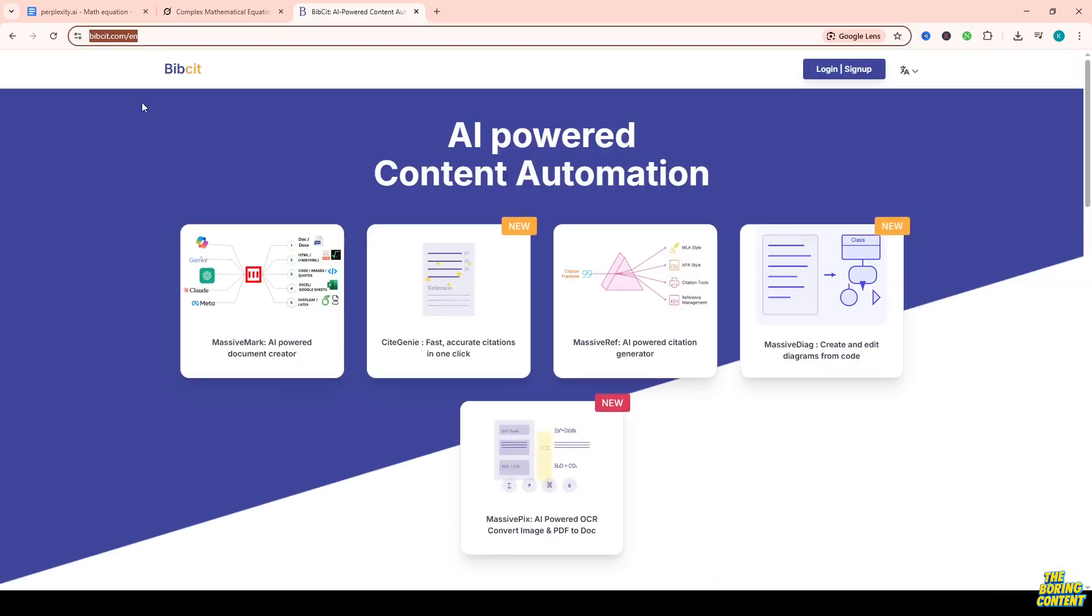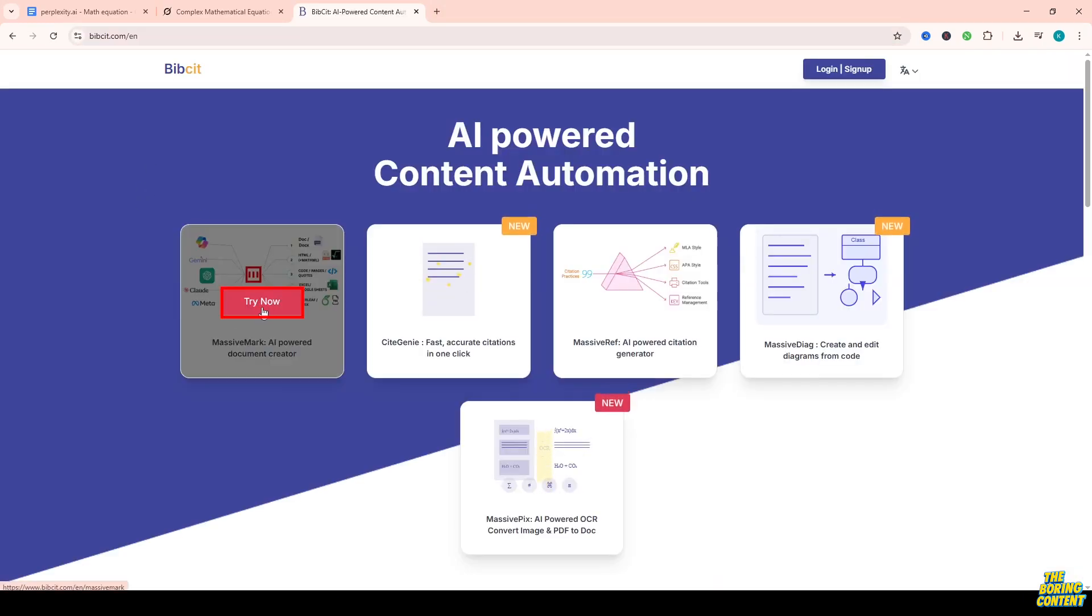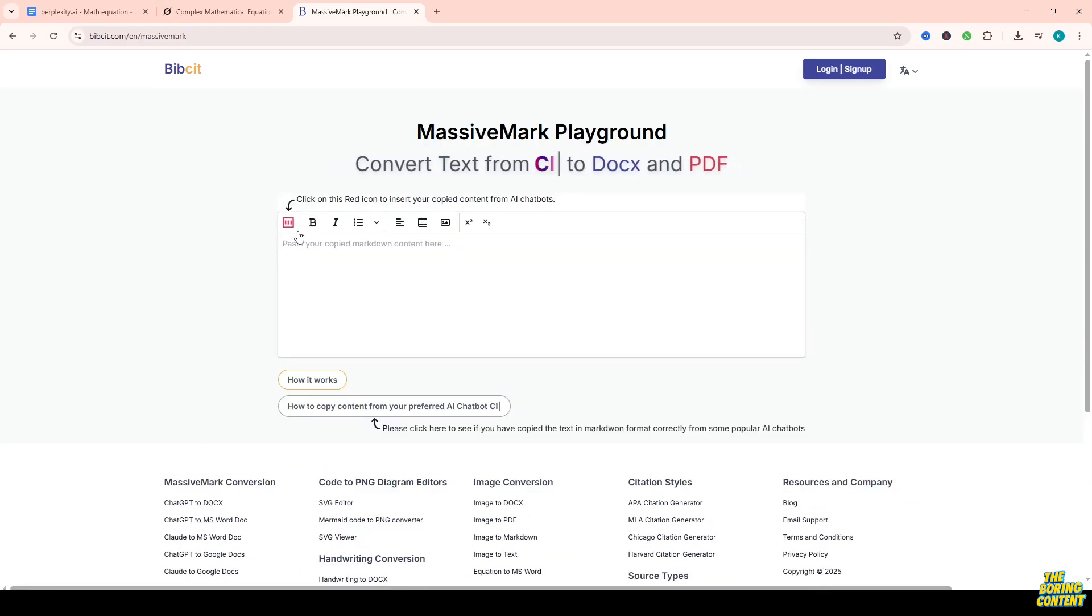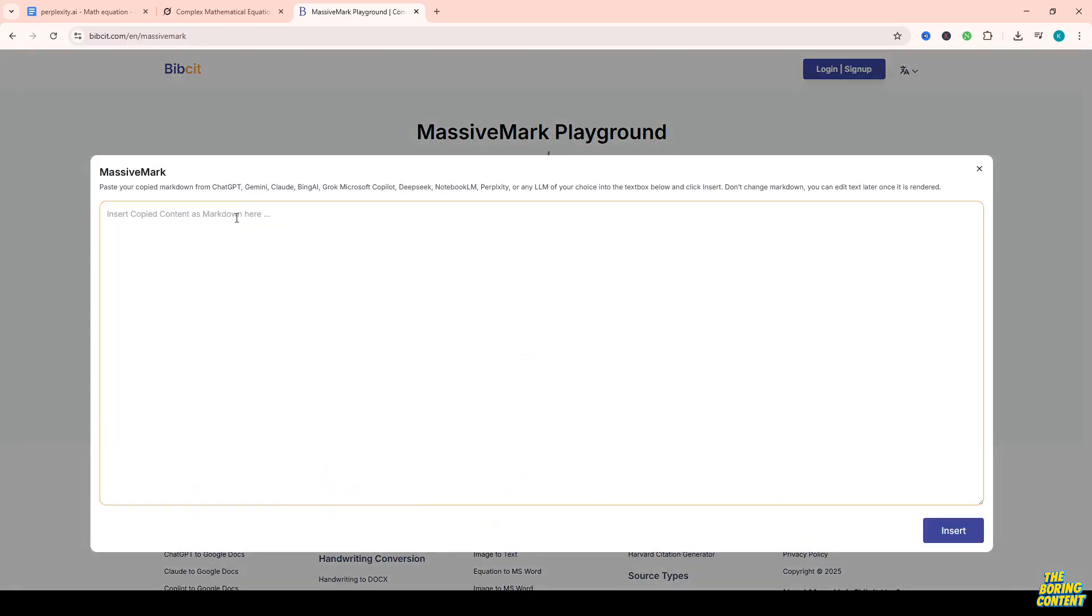Then head over to bbct.com and open the tool called Massive Mark. Click Try Now, paste in your equation, and hit Insert.